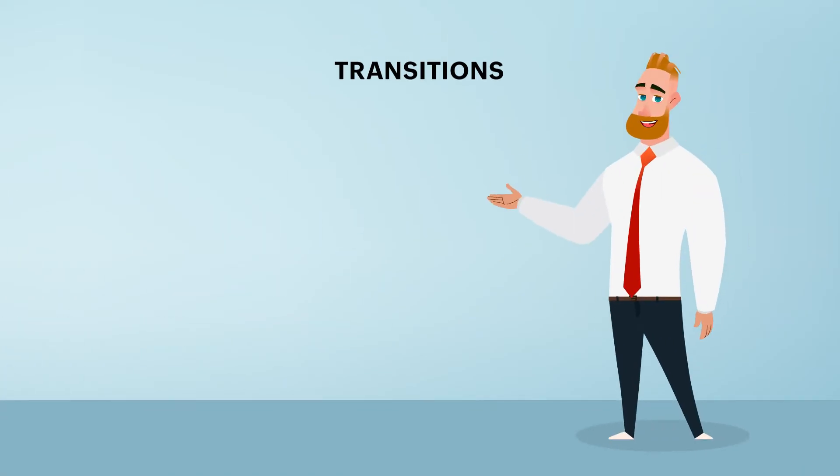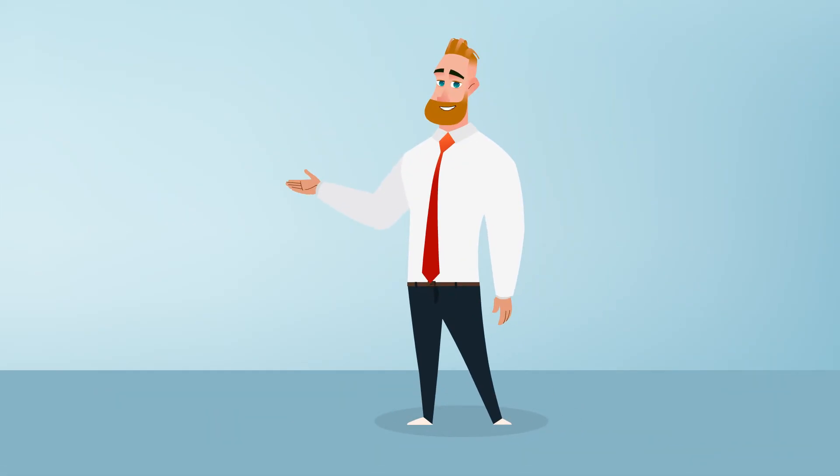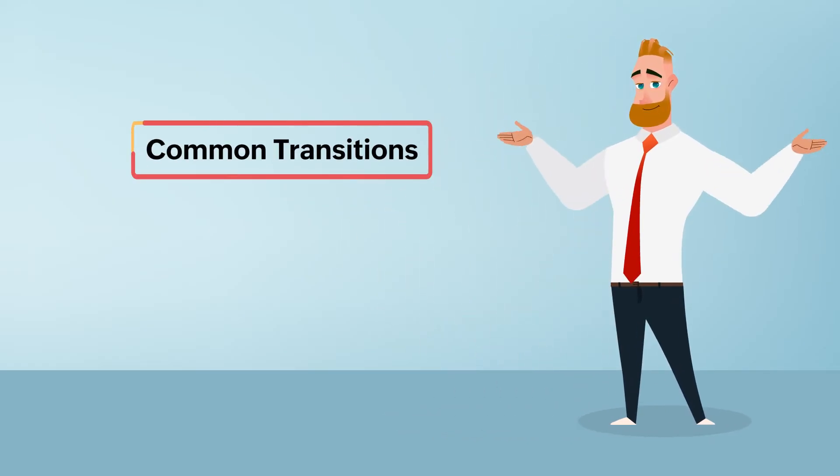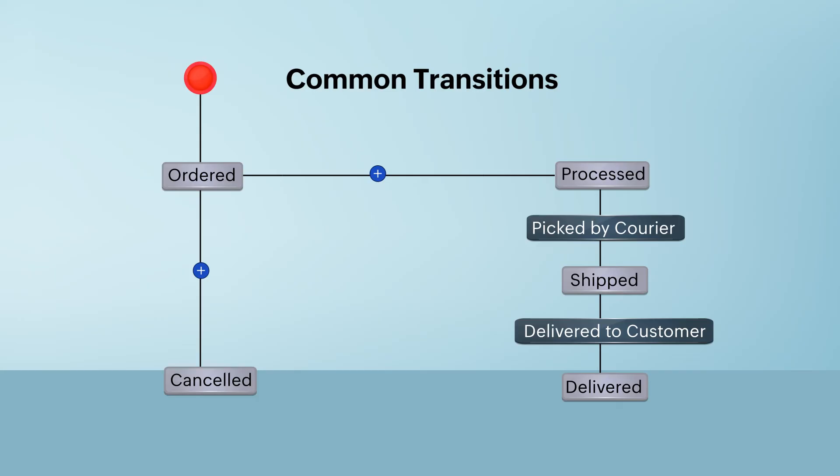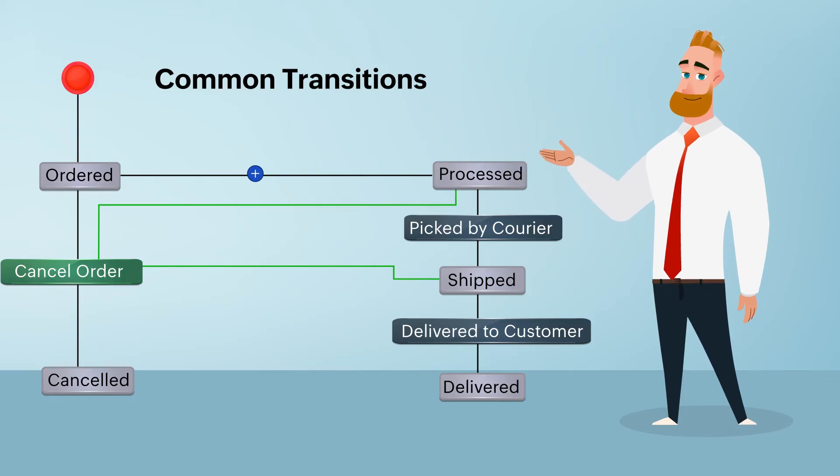Along with regular transitions, there are two other types of transitions, namely common and parallel transitions. A transition that can be executed from any stage in a process is called a common transition. For example, in an order processing app, if an order needs to be canceled, it can be done soon after the order is placed, processed, or shipped. In this scenario, the transition canceled can be executed from multiple stages. That's how a common transition works.